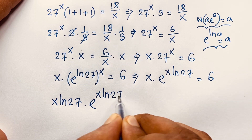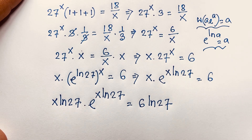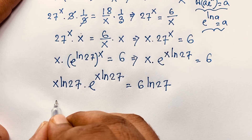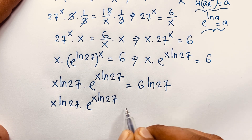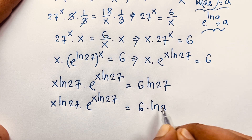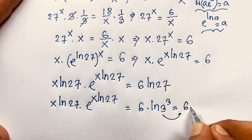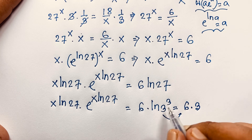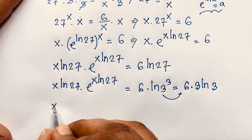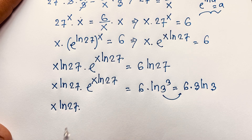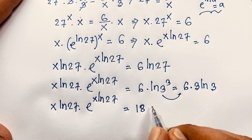So we have x·ln27 · e^(x·ln27) = 6·ln(3³). Since 27 = 3³, ln27 = 3·ln3, so the right-hand side becomes 6 times 3·ln3, which equals 18·ln3.